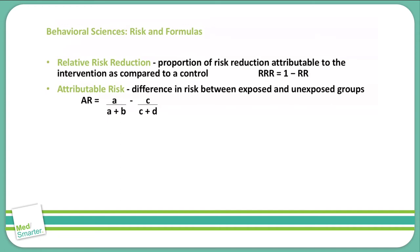The attributable risk is the difference in risk between exposed groups and unexposed groups. Our calculation of attributable risk is A over A plus B, minus C over C plus D. For example, the risk of lung cancer in smokers is 21% and the risk in nonsmokers is 1%. We calculate attributable risk as 21% minus 1%, which equals 20%. So our attributable risk to smoking and lung cancer is 20%.